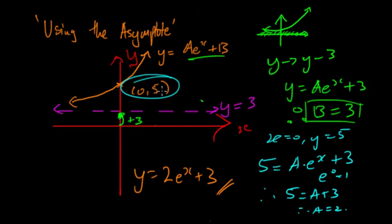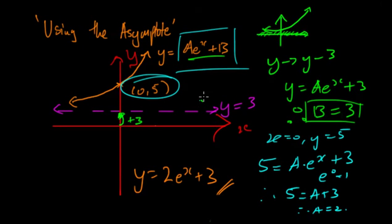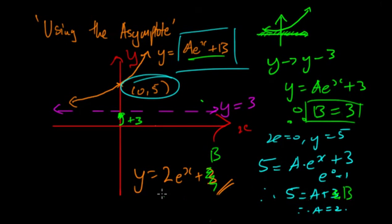So the final equation is y = 2e^x + 3. When you do these questions, make sure you look at all the information given — all the different points, all the different asymptotes. See what the general form is and then substitute in the different pieces of information. If you started with a point before the asymptote, you would have an equation in terms of b, and you'd use the asymptote to find b and substitute it back in.